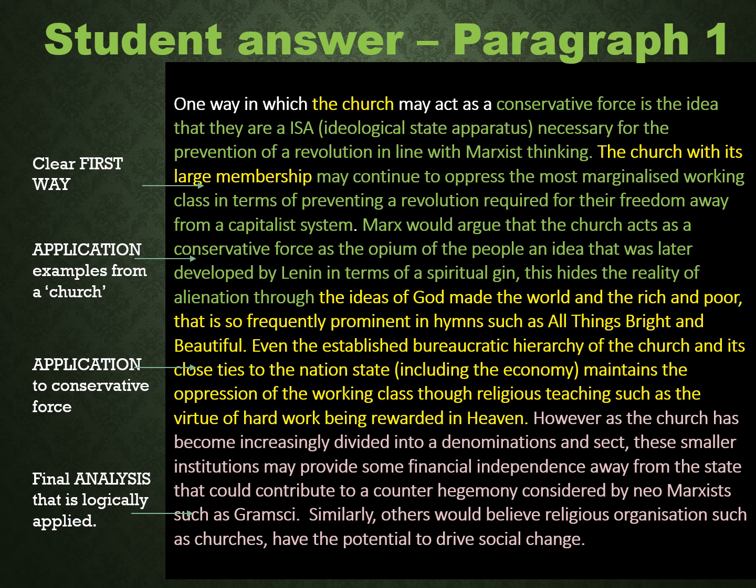The student explains that they understand what this means: it hides the reality of alienation. We go back to examples from the church — God made the world rich and poor, which is prominent in hymns such as 'All Things Bright and Beautiful.' So we've got some application there. We've got further characteristics of the church: it is an established bureaucratic hierarchy, very closely tied to the nation state, and this maintains the oppression of the working class through teachings such as the virtues of hard work being rewarding in heaven. That is our church and how it is a conservative force.